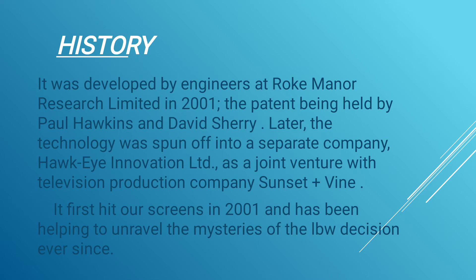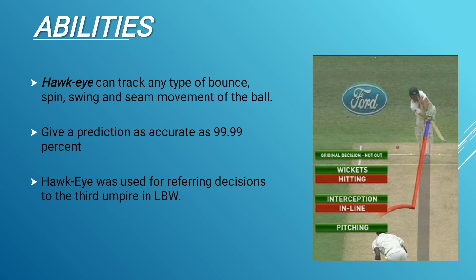Hawkeye first hit the screen in 2001 and has been helping to correct mistakes in LBW decisions ever since. Hawkeye can track any type of ball movement, including swing, and keeps predictions as accurate as 99.99 percent. Hawkeye is used for referring decisions to the third umpire in LBW reviews.